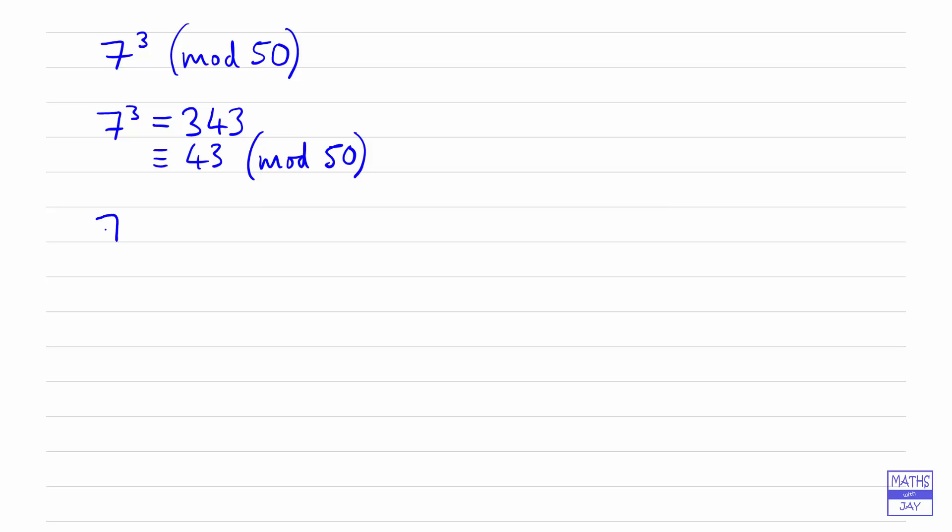So I could write 7 cubed as 7 squared multiplied by 7 and the reason I've done that is because I know that 7 squared is equal to 49 and that's useful because if I subtract 50 from it you can see it's congruent to minus 1 mod 50.